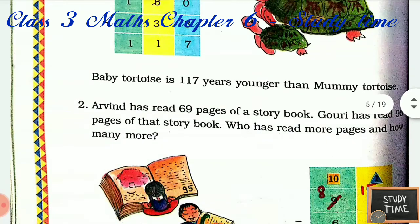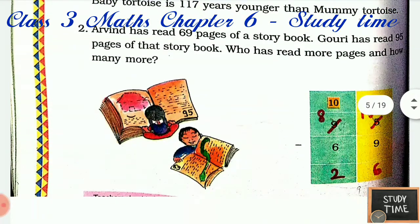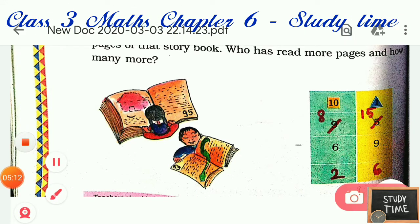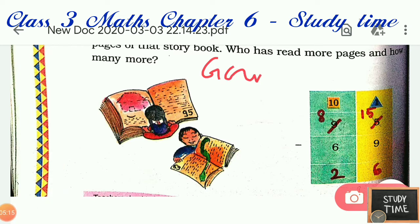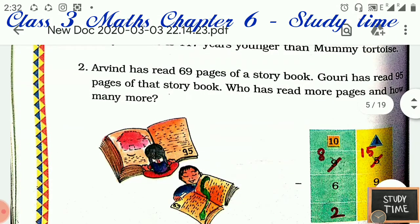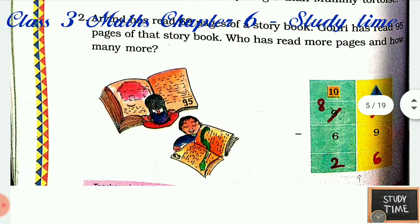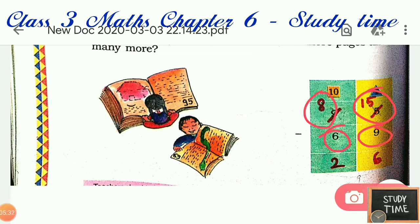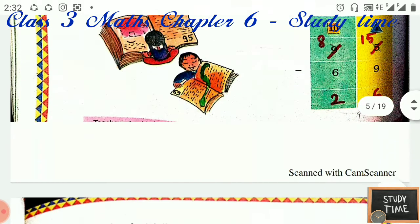Arvind has read 69 pages of a story book and Gauri has read 95 pages of that story book. Who has read more pages and how many more? Gauri has read more pages. You subtract 95 minus 69: 15 minus 9, then 8 minus 6, so the answer is 26 more pages.